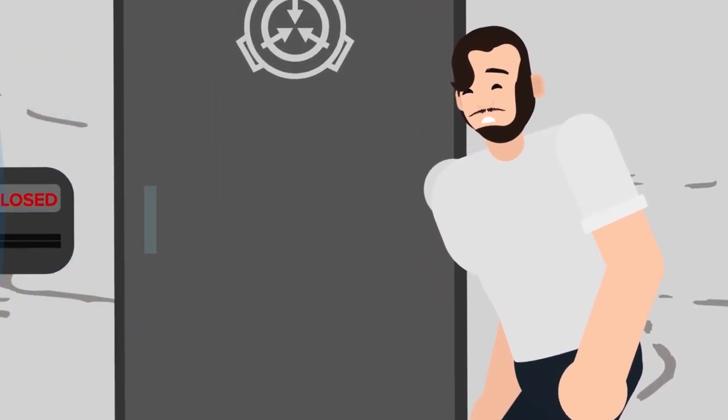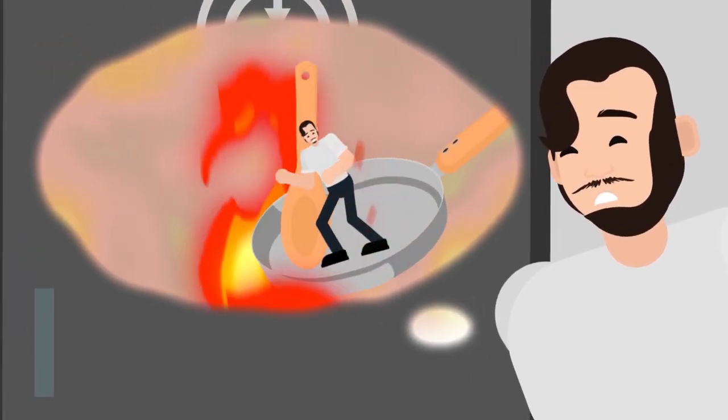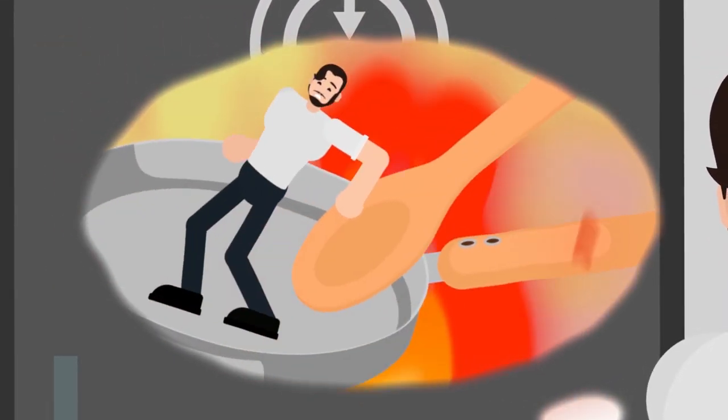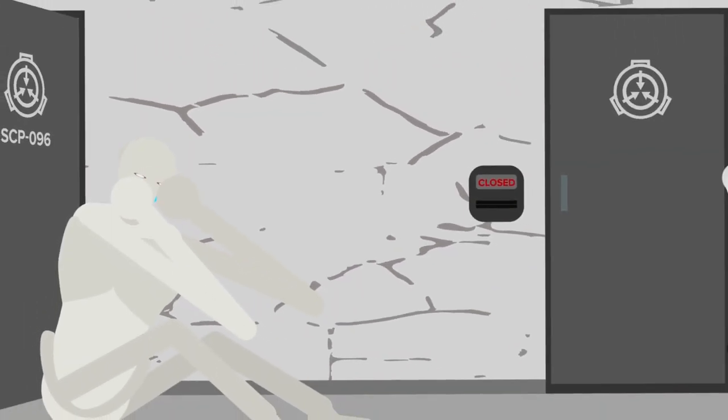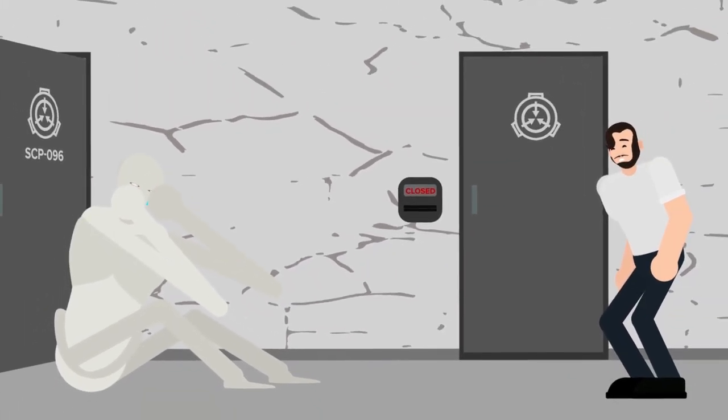As Markiplier stops to catch his breath, having thrown the Plague Doctor off of his trail, the sound of sobbing in the corner signals that he might have just escaped the proverbial frying pan, only to wind up in the fire. A quick cursory glance up, and the sight of a long-limbed, pale humanoid form would confirm his suspicions. Yes, yes indeed. He's found himself alone with SCP-096, the Shy Guy.